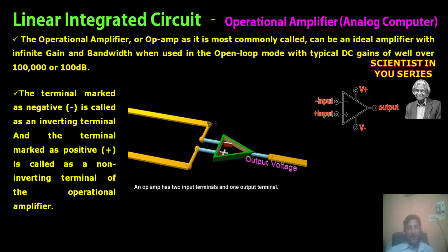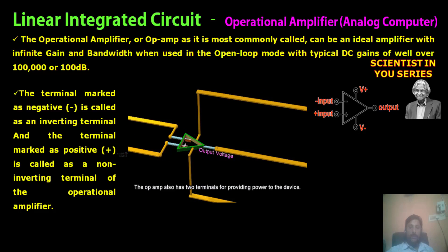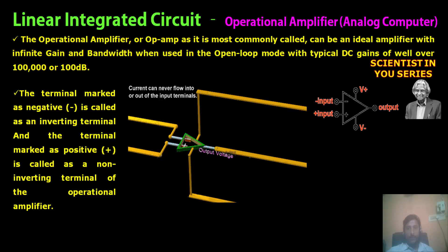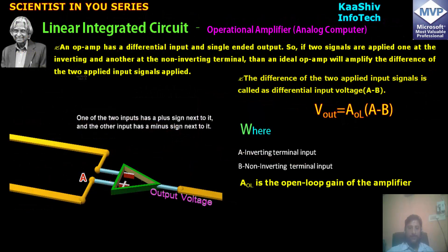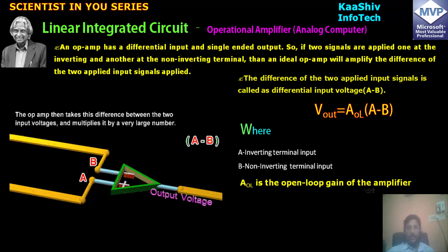Now, what is an operational amplifier? It is the capability to generate one normal voltage into one enormous or huge voltage. That is why they call it an operational amplifier. How do you generate that? You are able to see infinite gain and bandwidth — that is, typical DC gains of well over 100,000, or 100 decibels. The output voltage is: A into the positive non-inverting terminal, minus B into the inverting terminal — that voltage difference is multiplied by the largest value, called the Open Loop Gain of the amplifier.